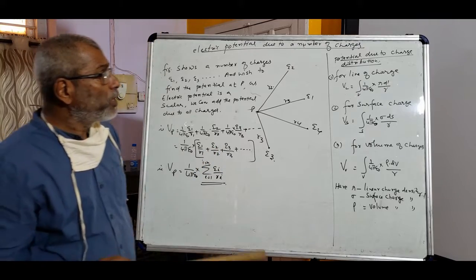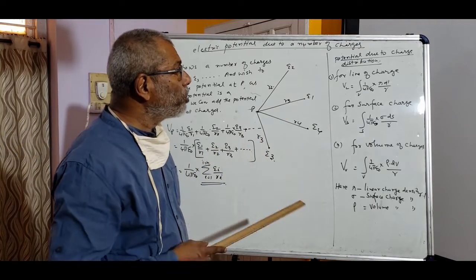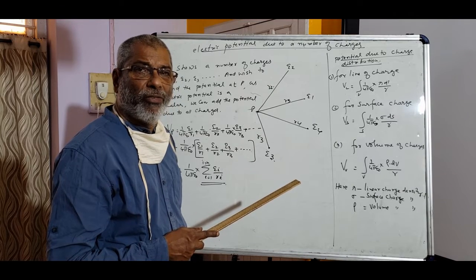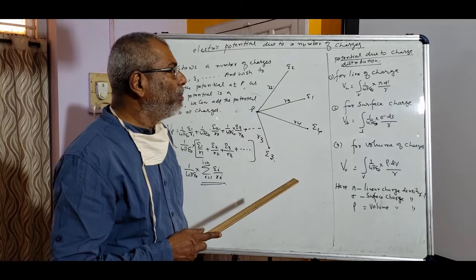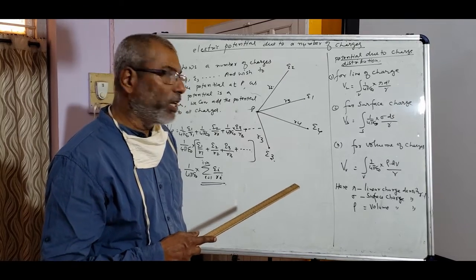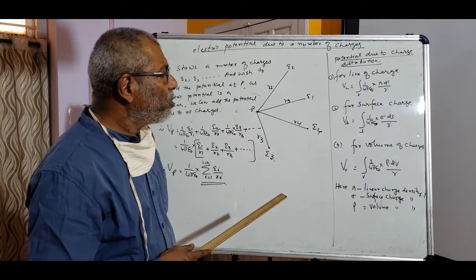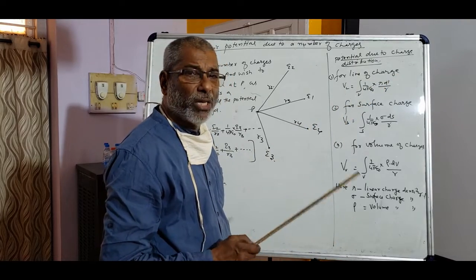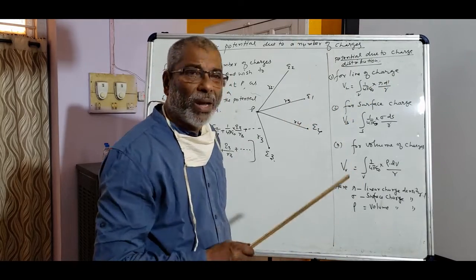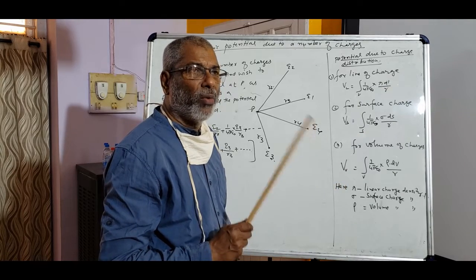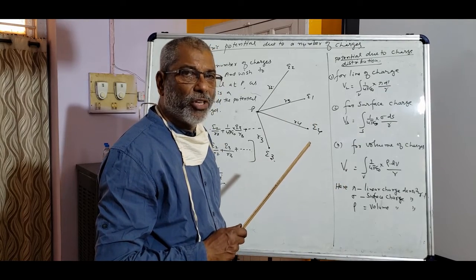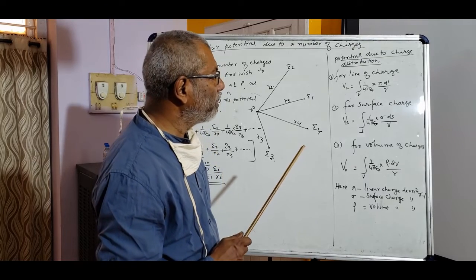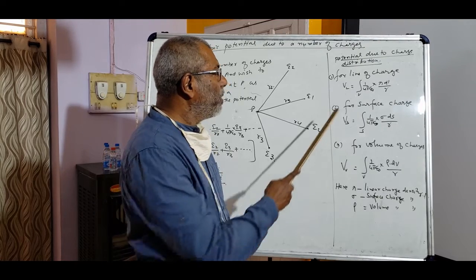Now we will discuss potential due to charge distribution. Electrostatic intensity of electric field due to charge distribution we have already set. So similarly for line of charge, line of charge means just like a wire, a metallic wire when charged, charge will distribute it uniformly along the whole length of the conductor or wire.